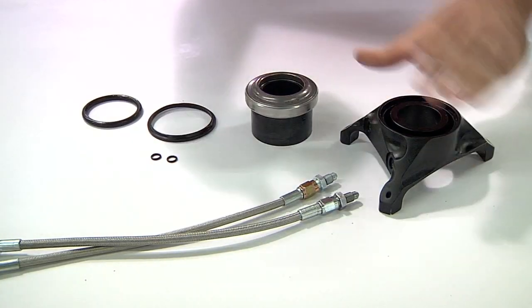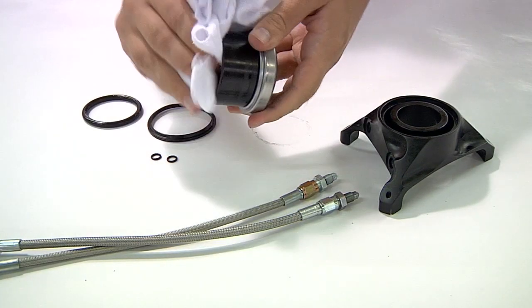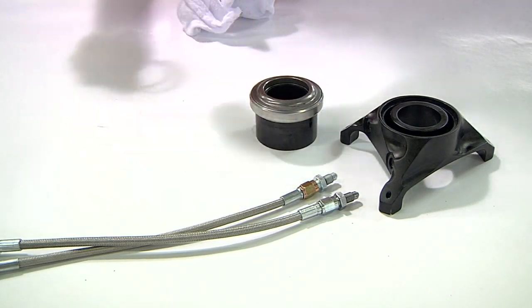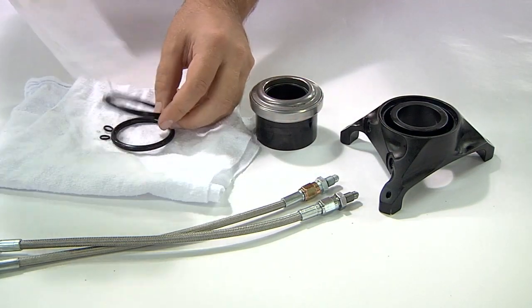Once the bearing is apart, clean the parts with isopropyl alcohol or soap and water. Make sure everything is dry before reassembly.